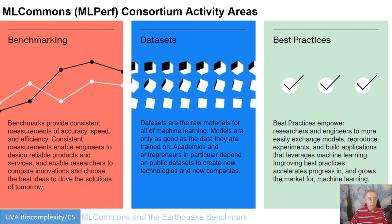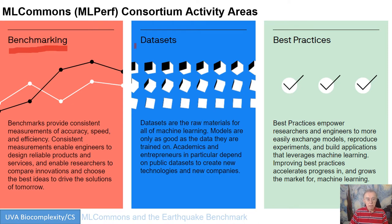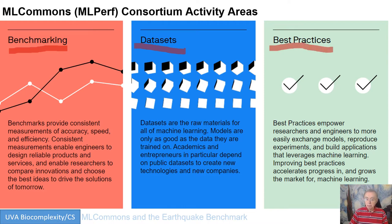They have three complementary goals. Benchmarking — seeing how fast a particular algorithm runs on a particular hardware, or seeing how good a particular algorithm does. They have datasets, because you can't really test an algorithm unless you have a clearly well-defined dataset and everybody uses the same dataset. Actually, if you want to compare hardware, they have to also use the same algorithm. And then there's best practices — you want to make certain that you disseminate to the world the best way of doing these novel machine learning algorithms, which are so new there is not quite the same level of agreement as there has been in the past.